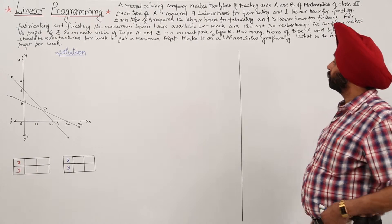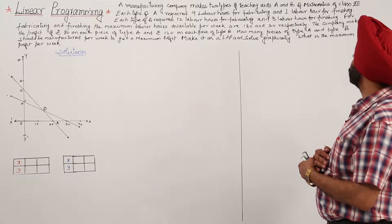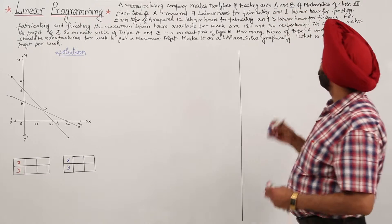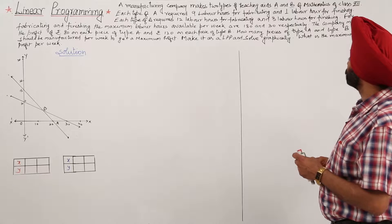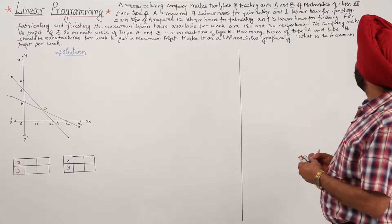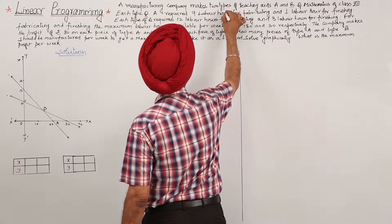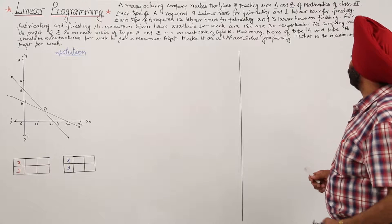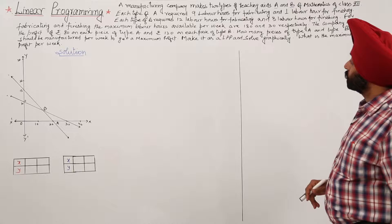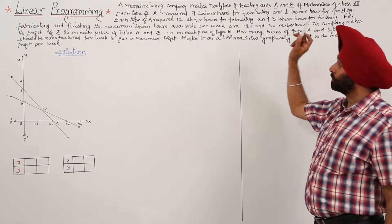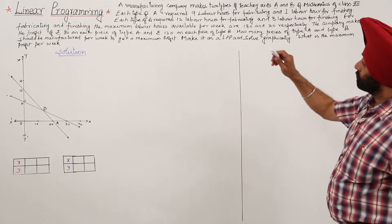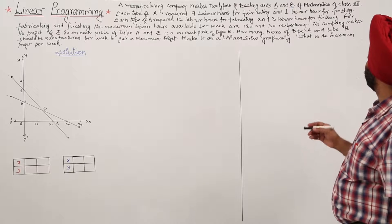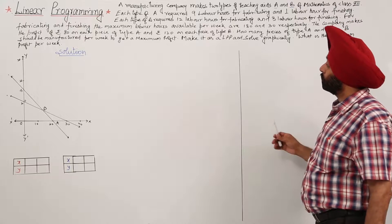Question on the manufacturing problem. A manufacturing company makes 2 types of teaching aids A and B of mathematics for class 12. Each type A requires 9 labour hours for fabricating and 1 labour hour for finishing. Each type B requires 12 labour hours for fabricating and 3 labour hours for finishing. The maximum labour hours available per week are 180 and 30. The company makes a profit of Rs. 80 on each piece of type A and Rs. 120 on each piece of type B. How many pieces of type A and type B should be manufactured per week to get maximum profit?